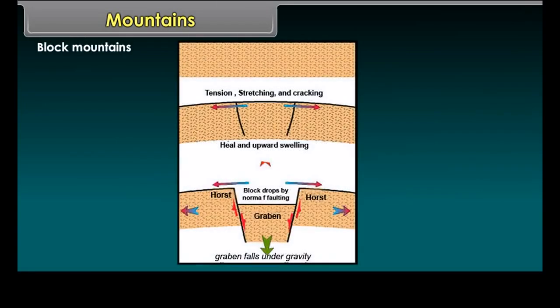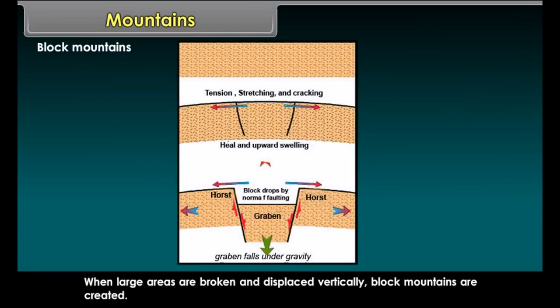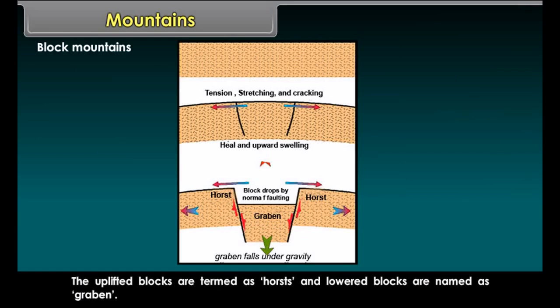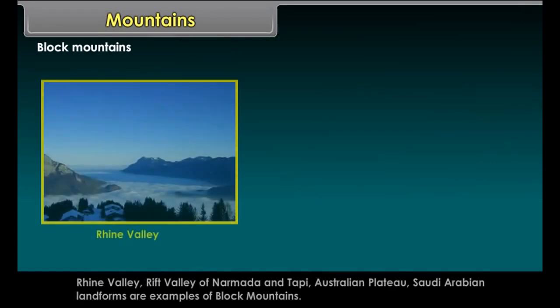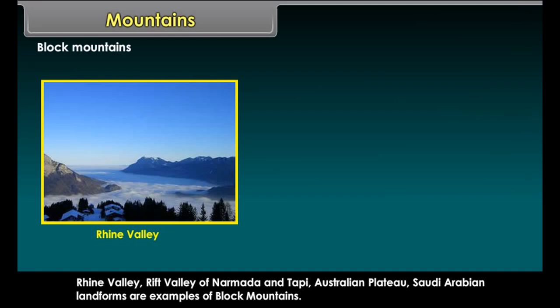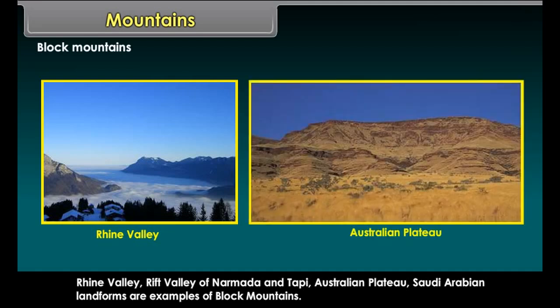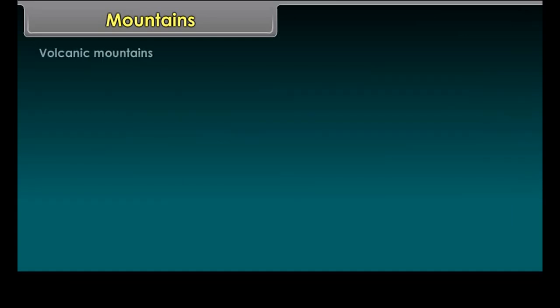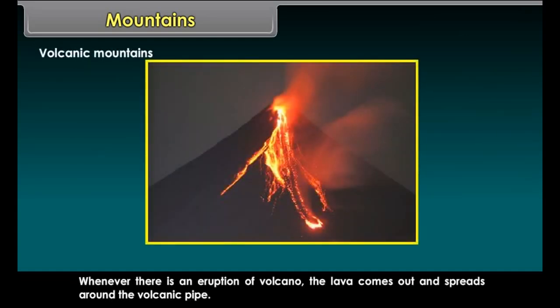Block Mountains are created when large areas are broken and displaced vertically. The uplifted blocks are termed as horst and the lowered blocks are named as graben. The Rhine Valley, the Rift Valley of Narmada and Tapti, the Australian Plateau, and Saudi Arabian landforms are examples of block mountains.